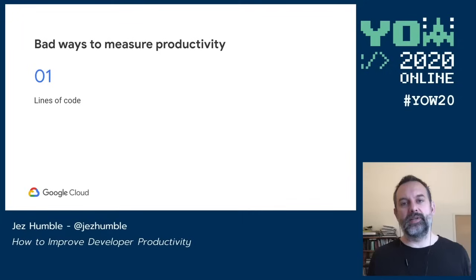Let's move on to another bad productivity measure: velocity. Velocity is a very common measure in agile teams, used to measure the amount of work done in an iteration. At the beginning of the iteration we estimate work in some relative size — t-shirt sizes, gummy bears, story points, or similar — and at the end we count how many stories were completed and add up the points, giving us the velocity for the iteration.